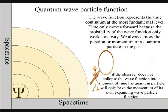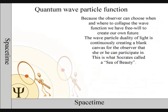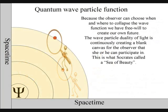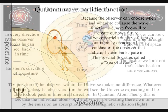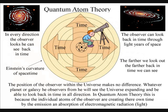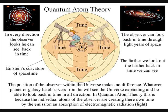It is because we can choose when and where to collapse a wave function that we have free will to create our own future. The observer is at the centre of their own created symmetry or reference frame and can look back in time through light years of space at the beauty of the stars. The position of the observer within the universe makes no difference.